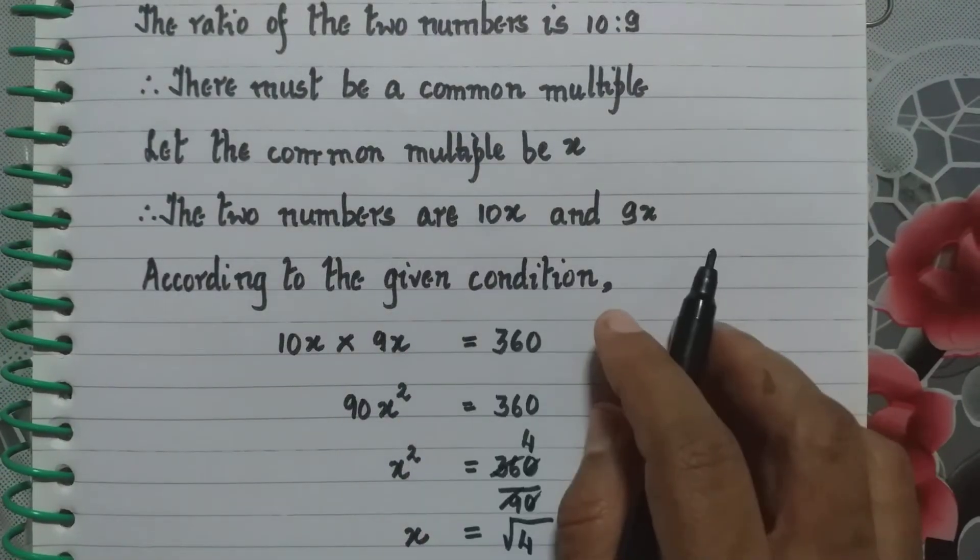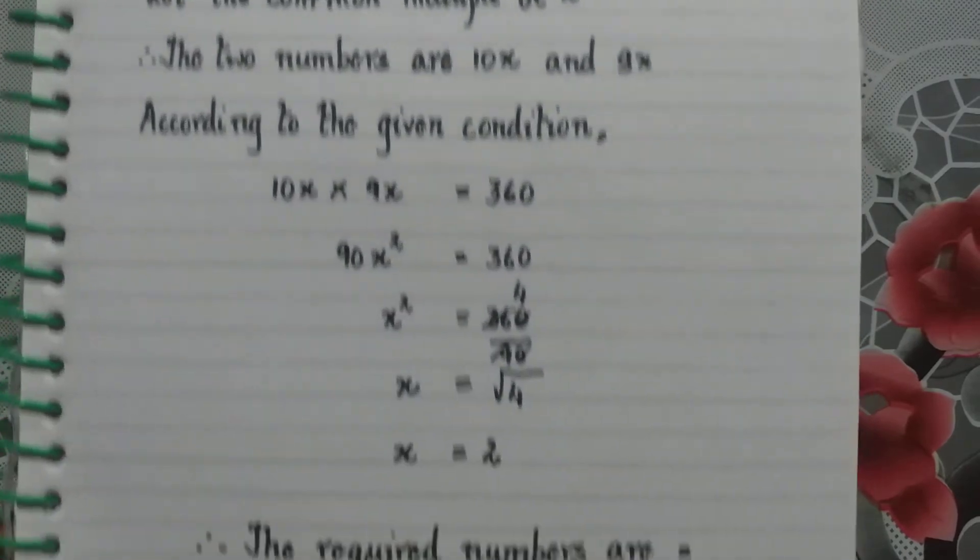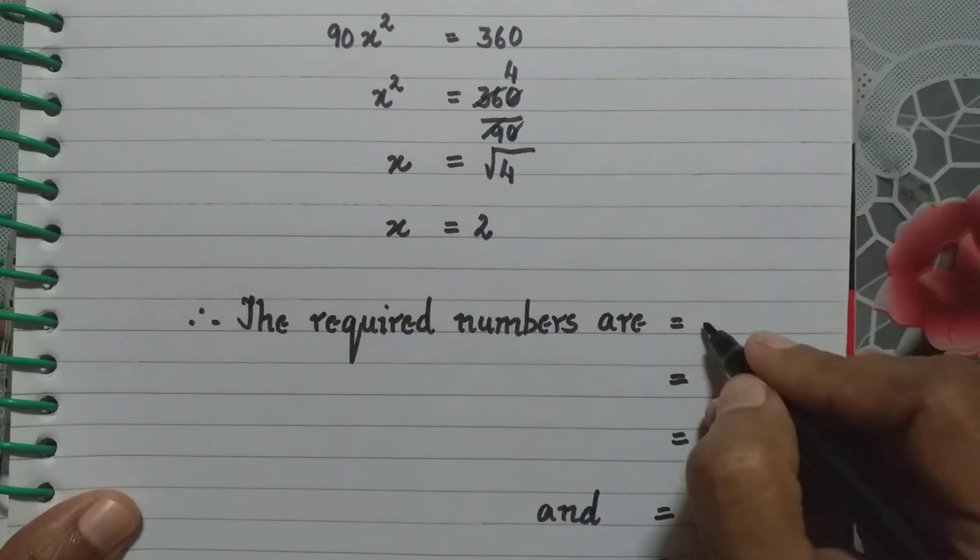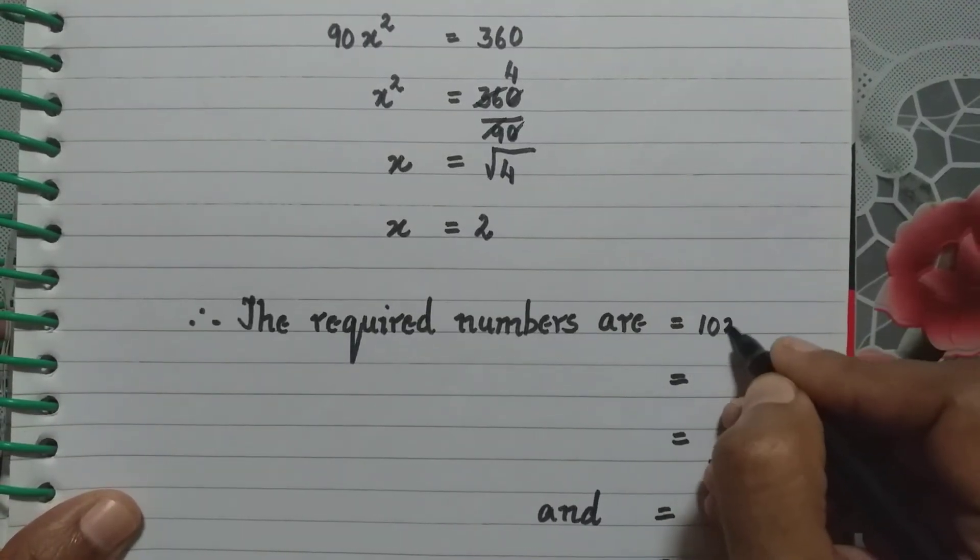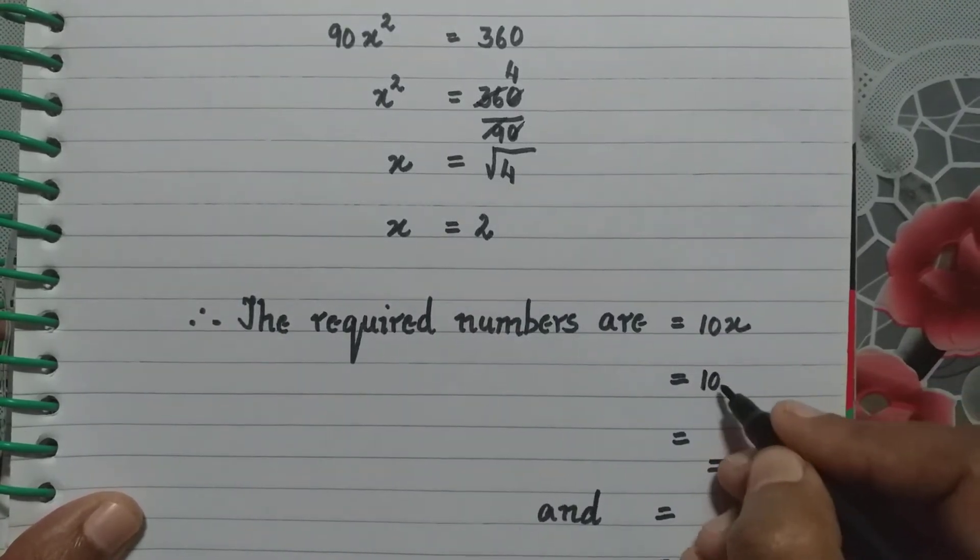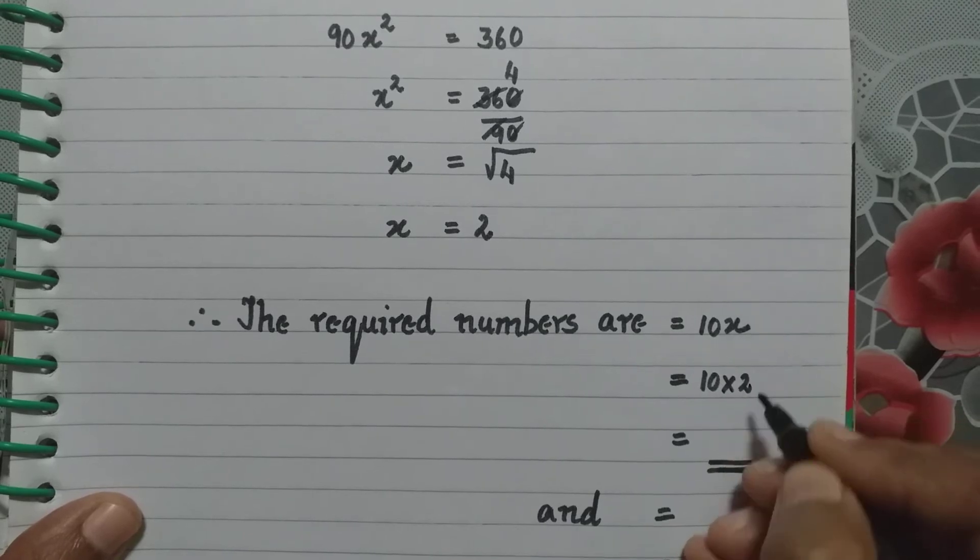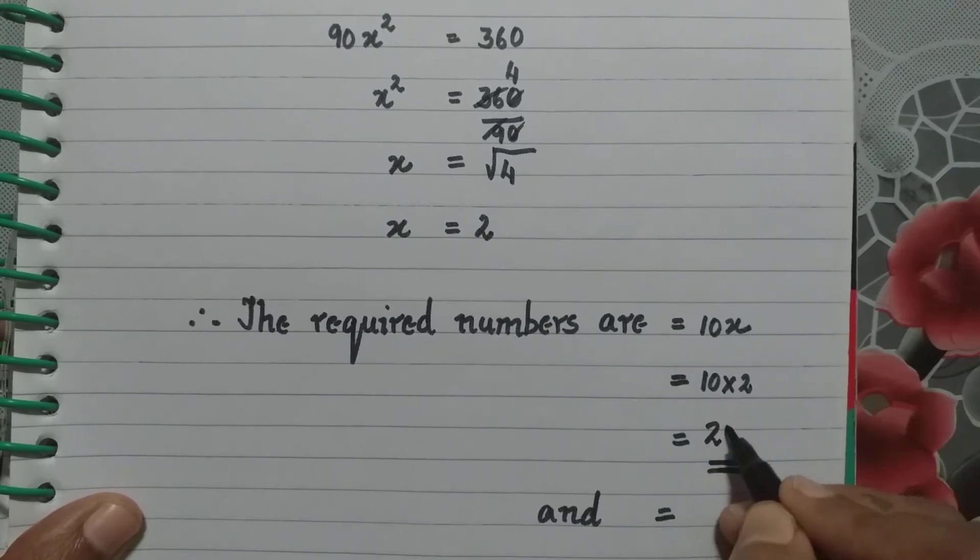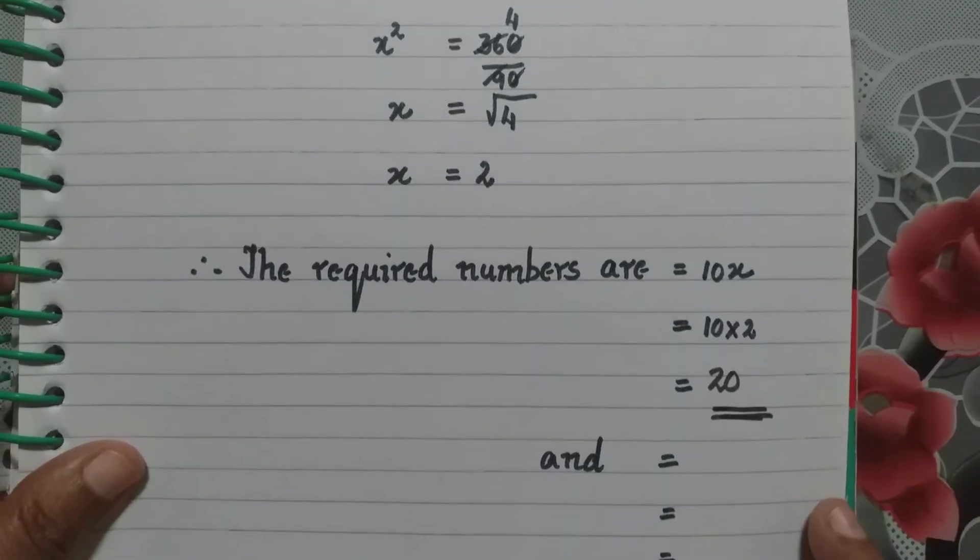So what will be the required numbers? The numbers are 10x and 9x. So the first number is 10x, so 10 into x and x is 2, so 10 into 2. 10 into 2 is 20. Therefore the first number is 20.